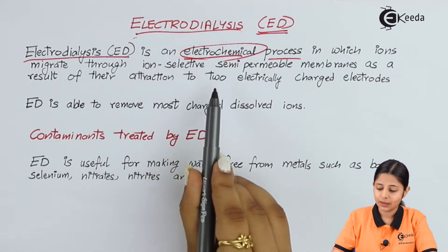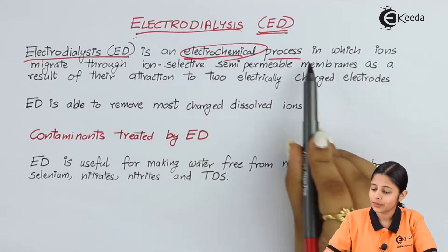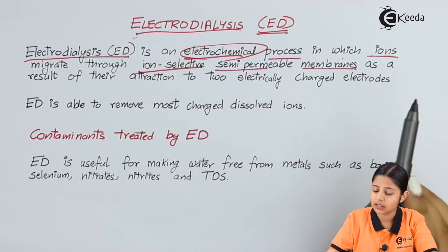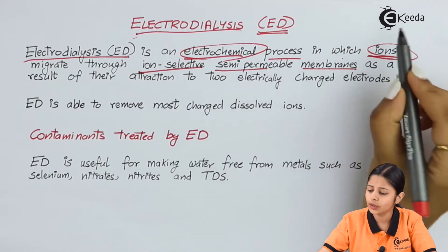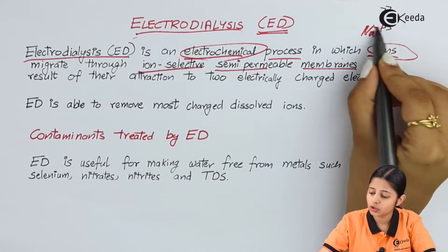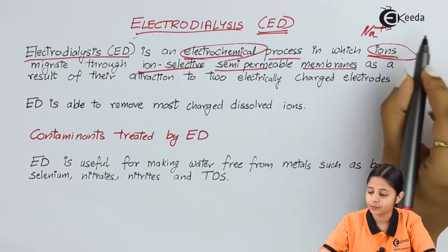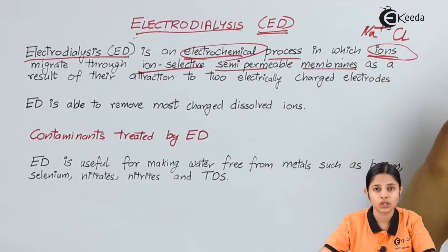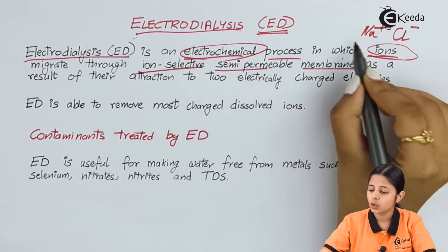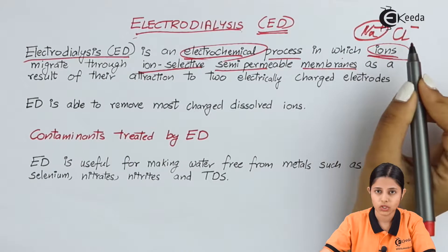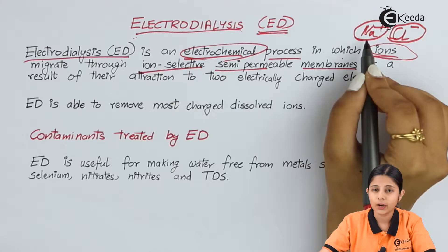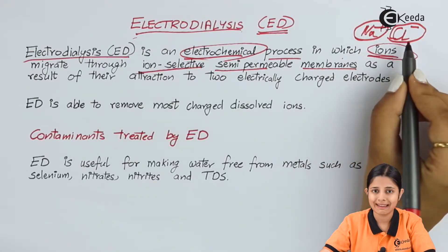Electrodialysis is one type of electrochemical process in which ions migrate through ion-selective semi-permeable membranes. What exactly are ions? If I write sodium — Na — this is a sodium atom, but if I put a positive charge on it, it becomes an ion. Similarly, Cl is just a chlorine atom, but if I put a negative charge on it, it becomes an ion. Na+ is a positive ion, Cl- is a negative ion. Positive ions are known as cations; negative ions are known as anions.